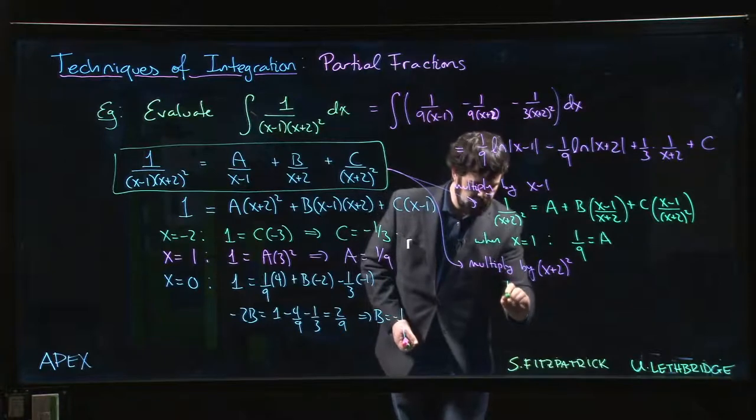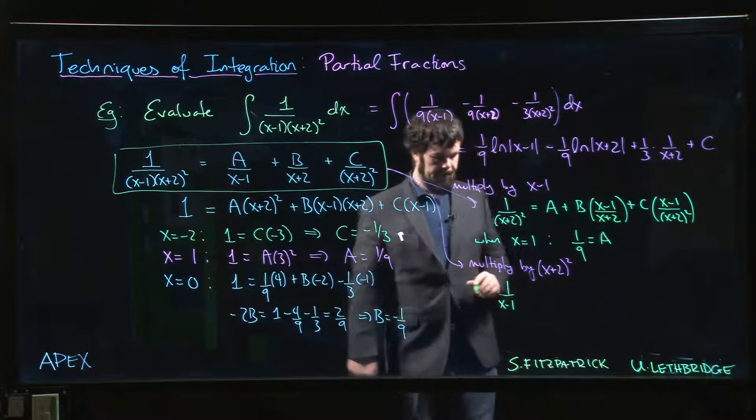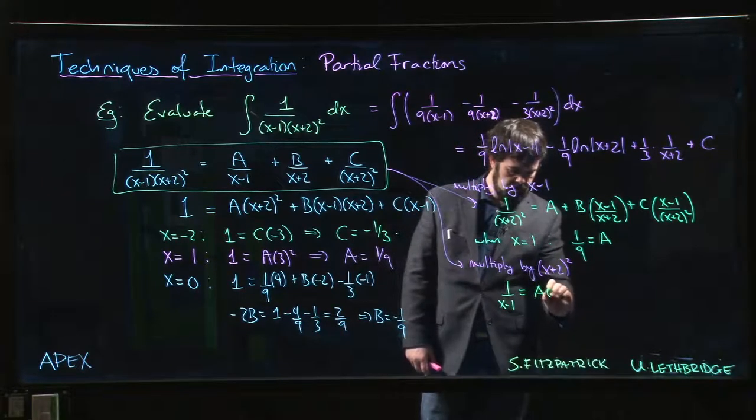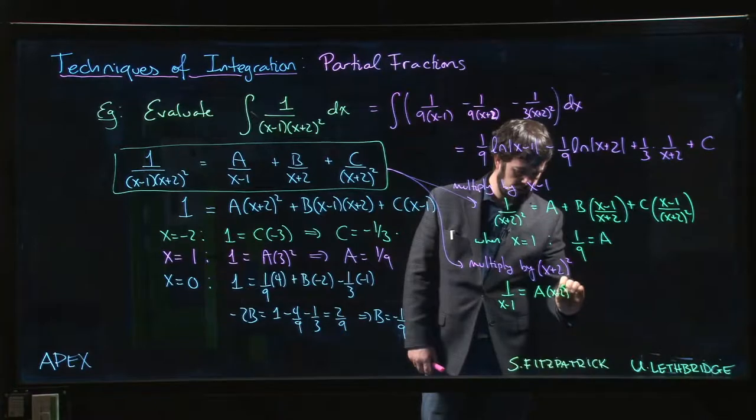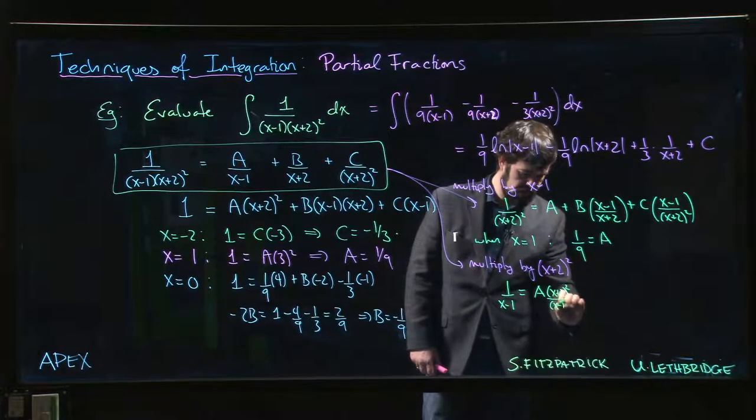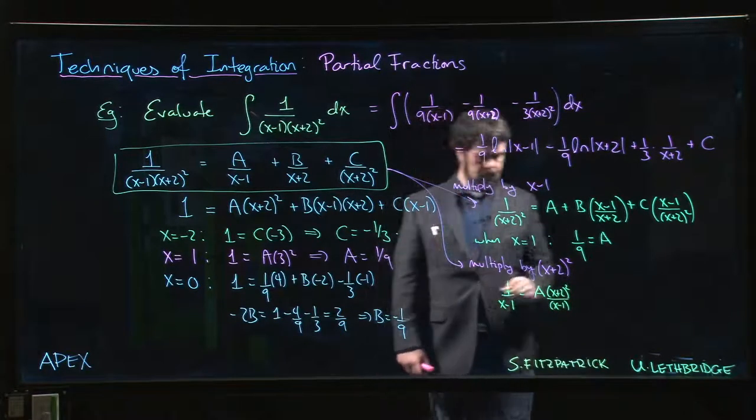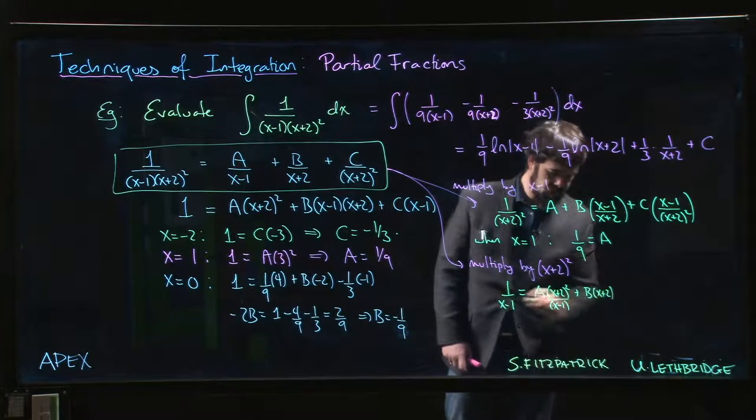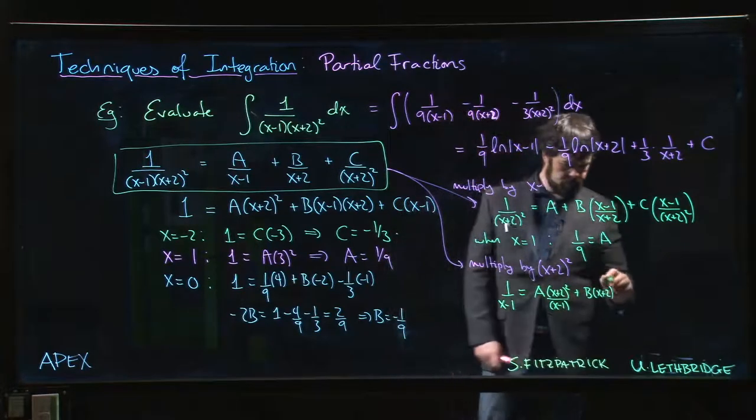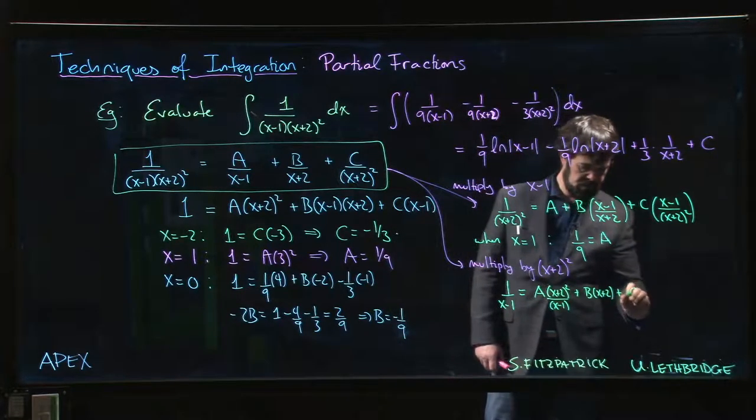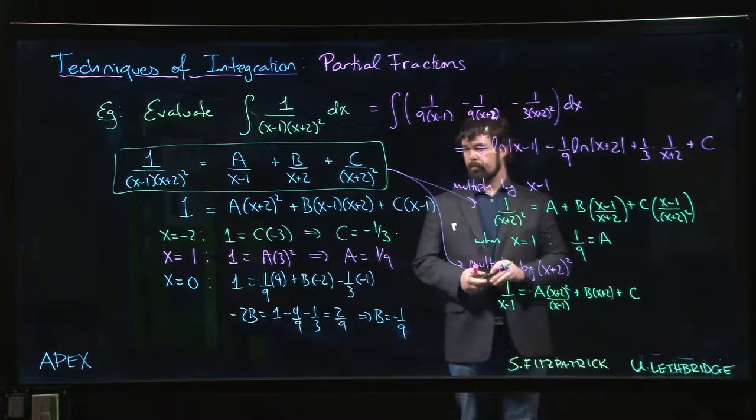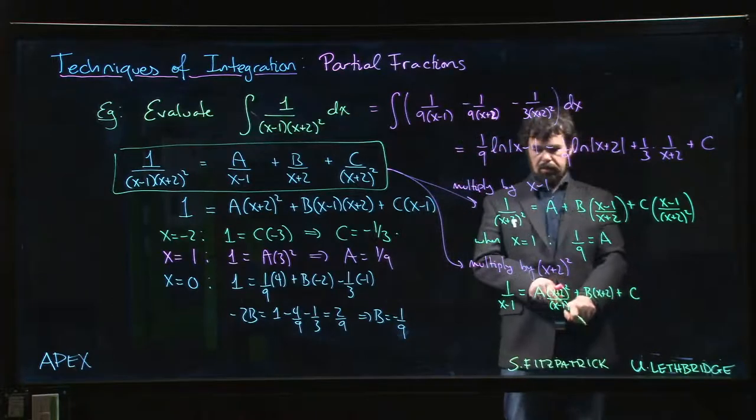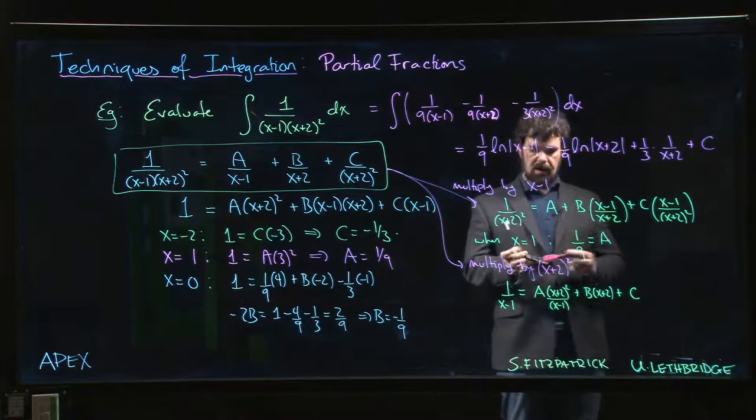Okay, then what I get over here is simply 1/(x-1) equals a(x+2)^2/(x-1) plus b(x+2) plus c. All right, and if I now plug in x equals minus 2...